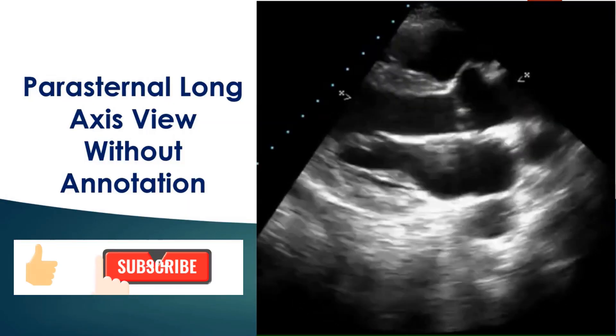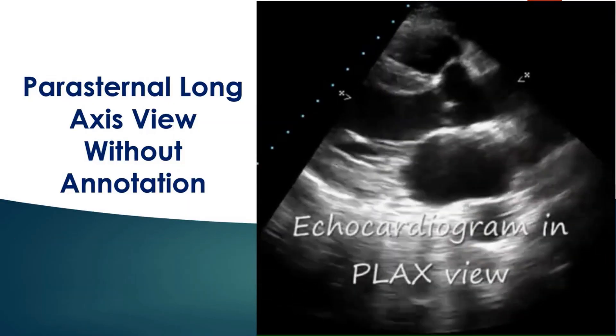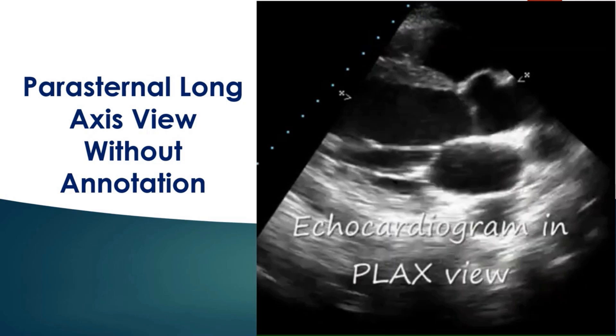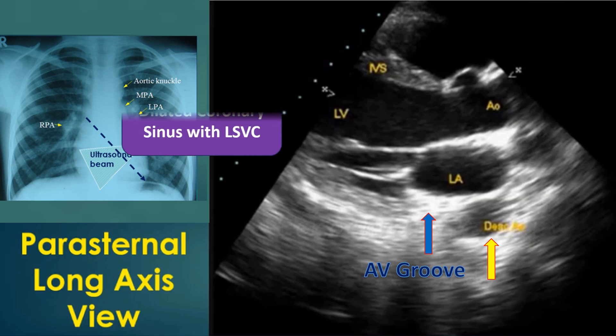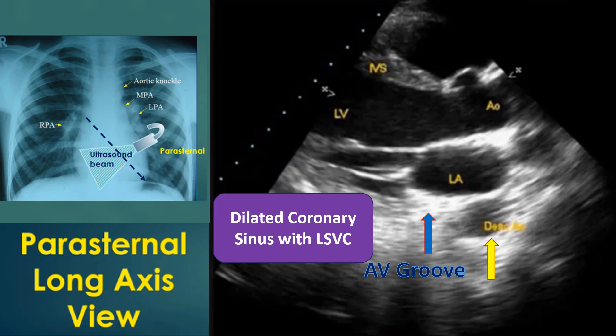Parasternal long axis view without annotation. Cross section of the descending aorta is seen posterior to the left atrium. The coronary sinus can be imaged if it is dilated and will be visible in the atrioventricular groove. A dilated coronary sinus would suggest a persistent left superior vena cava draining into the coronary sinus.